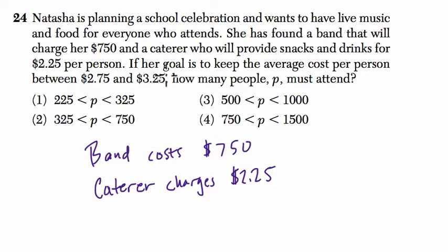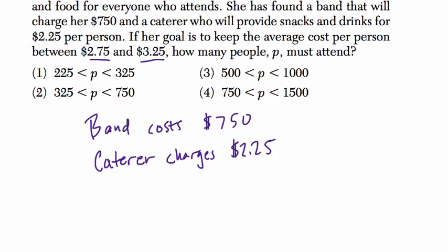Because your goal is to keep the average cost per person between this range, how many people should attend. The basic idea of this problem, think about it. If you're having a party and you've got to pay $750 flat cost, and you also have to pay $2.25 for everyone who enters, right? If that's the case...